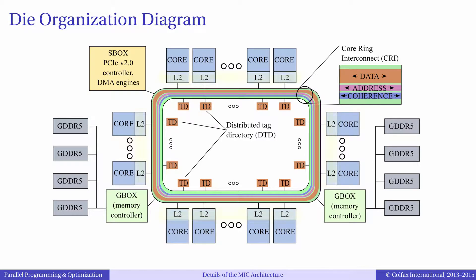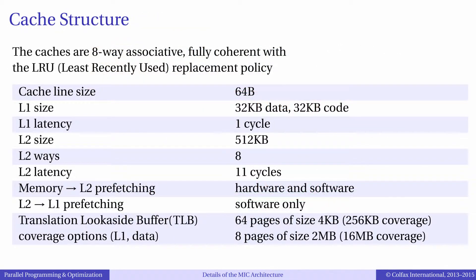Each core has a slice of the level 2 or L2 cache with hardware pre-fetcher. Together the caches of all cores form a fully coherent aggregate cache. Inside the core the level 2 cache is in turn cached by a level 1 or L1 cache. This memory hierarchy is extremely important from a programmer's point of view because data locality and better memory access patterns can dramatically improve the performance of parallel applications.